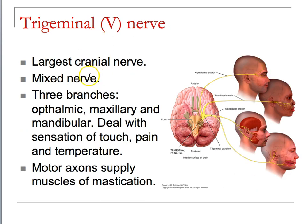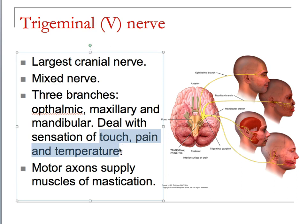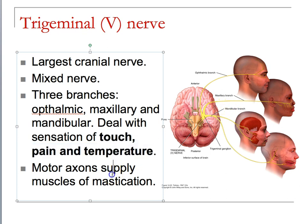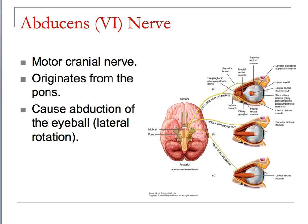The trigeminal nerve is a mixed nerve. It has ophthalmic, maxillary, and mandibular divisions, and it deals with the sensation of touch, pain, and temperature. It also supplies the muscles of mastication — ensuring the appropriate amount of force so that the jaw moves, the tongue moves properly, and you don't bite your tongue all at the same time. If you've ever done that, you know how painful it is.